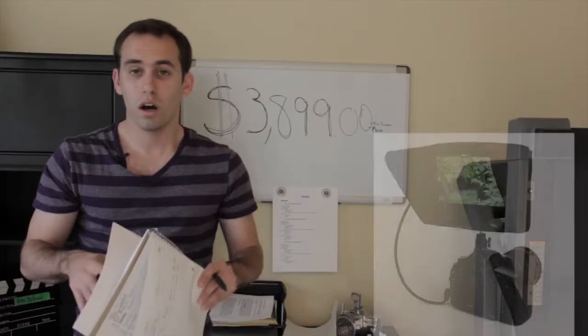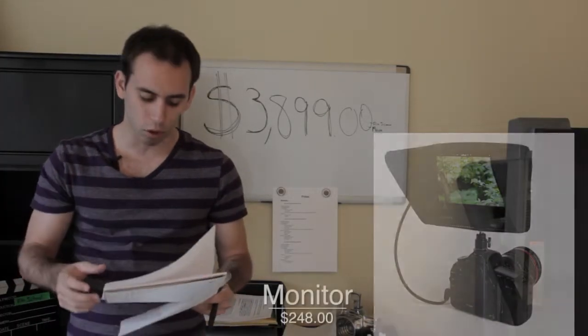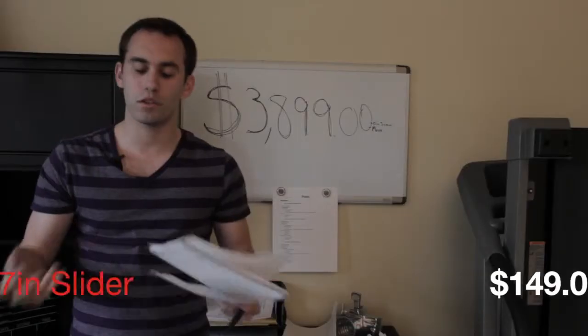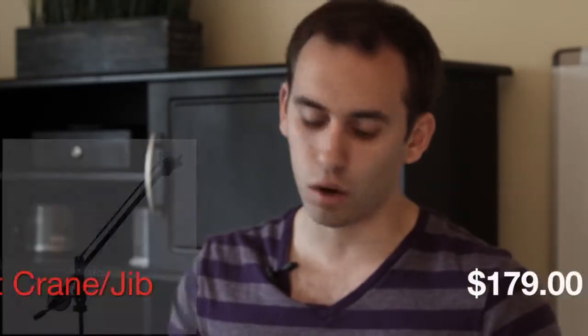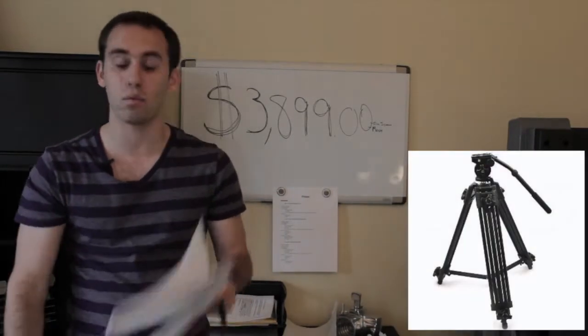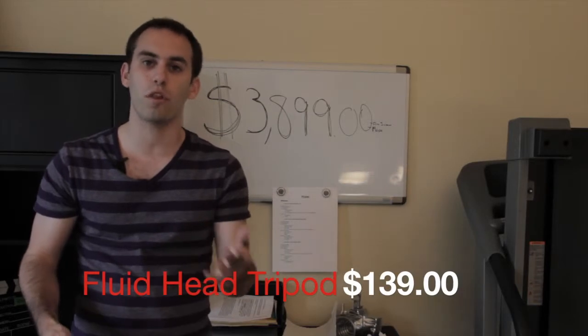I would also suggest a monitor maybe too. It's always good to have one because that LCD screen is a little small, about $248 for a very good one. Then you have a 47-inch slider for $149, a 4-foot crane or jib for $179, and a fluid head tripod which is ideal for any videographer, about $139.